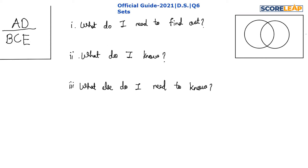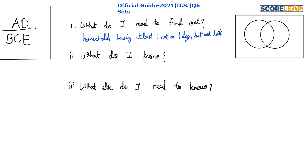We need to find the number of households having at least one cat or at least one dog, but not both. Now, from the question statement, we know there are 50 households in the group — this data is given directly in the question statement.